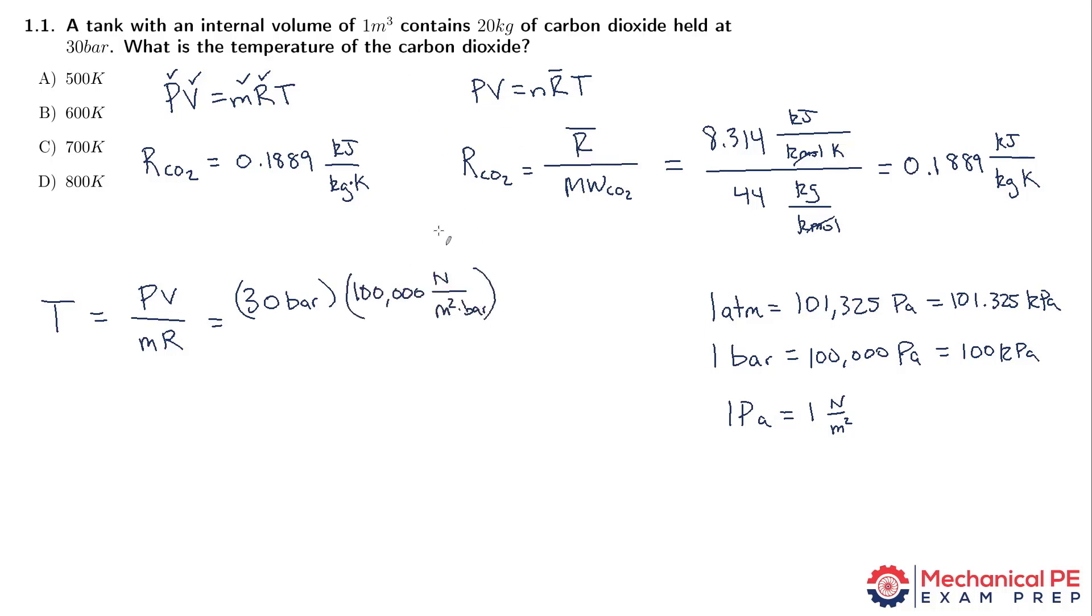The volume is 1 meter cubed. And in the denominator, we have the mass, which is 20 kg, and the specific gas constant, which is 0.1889. And that has units of kilojoules per kilogram Kelvin. Now we've got to check the units here and make sure everything works out.